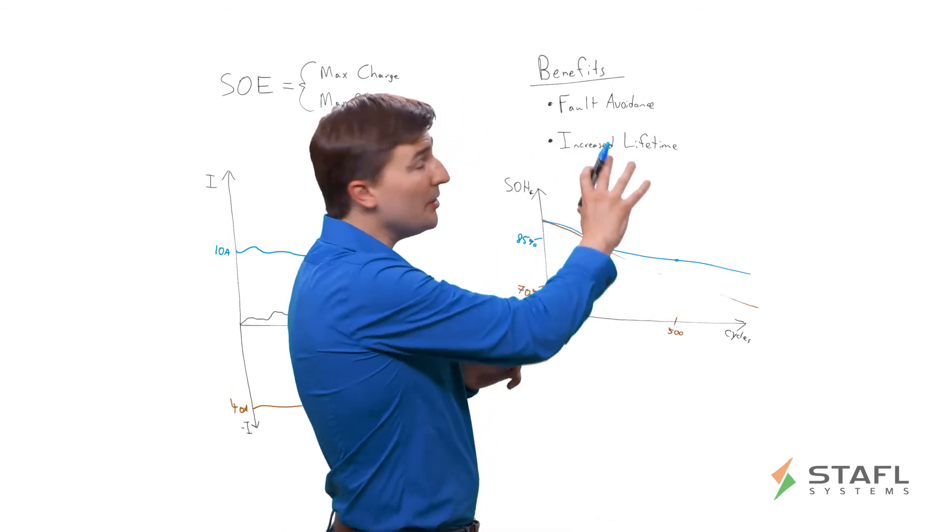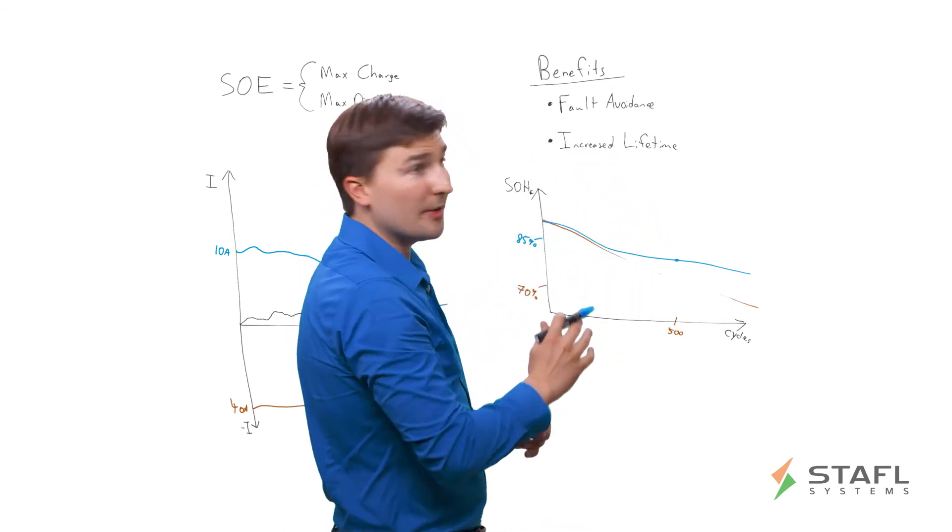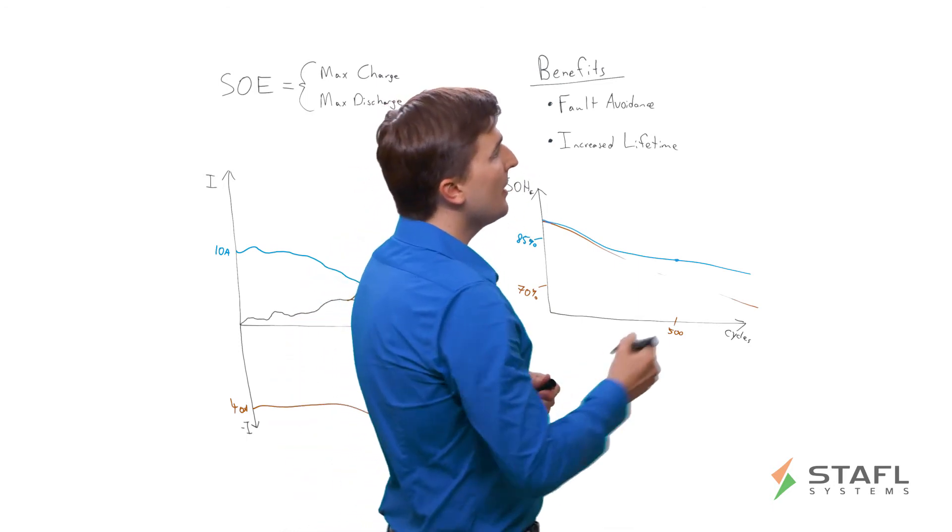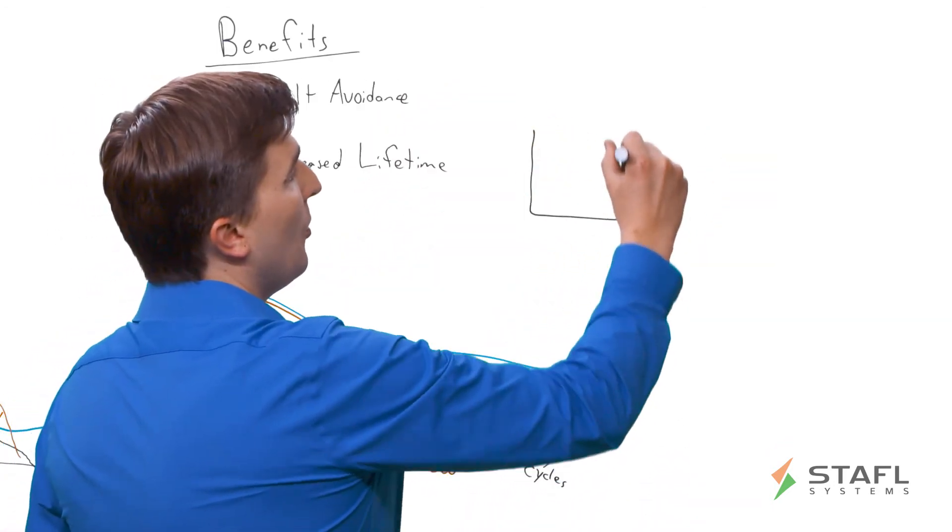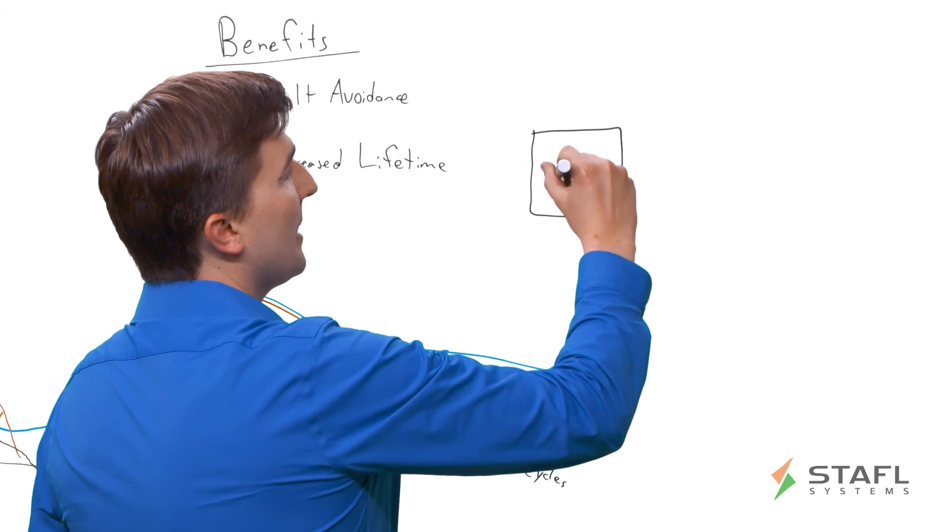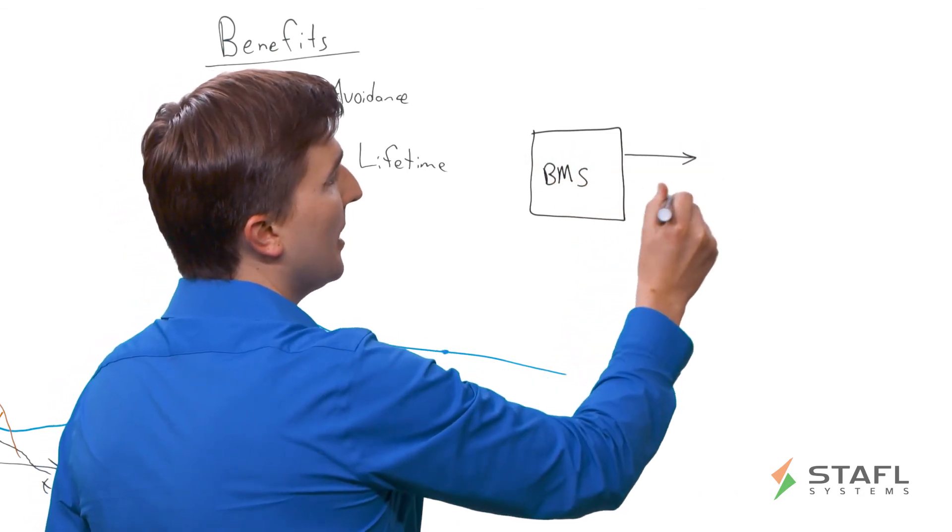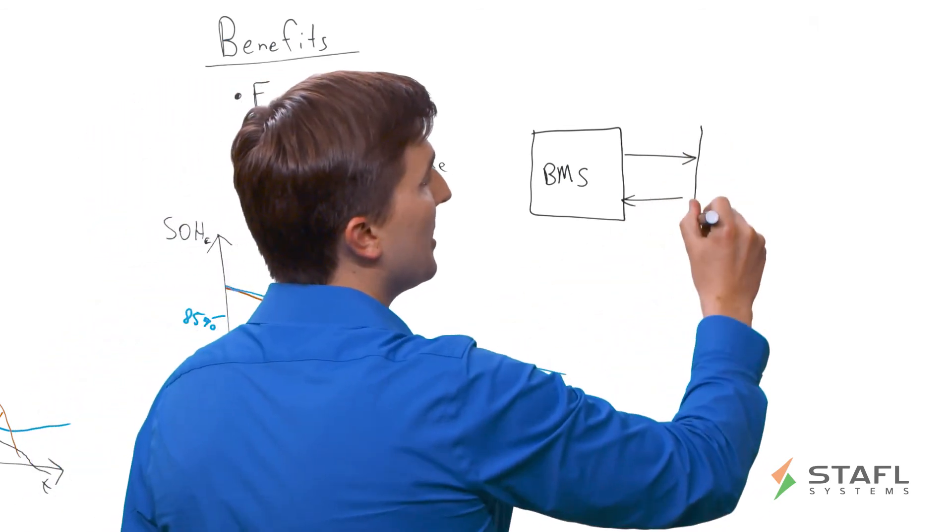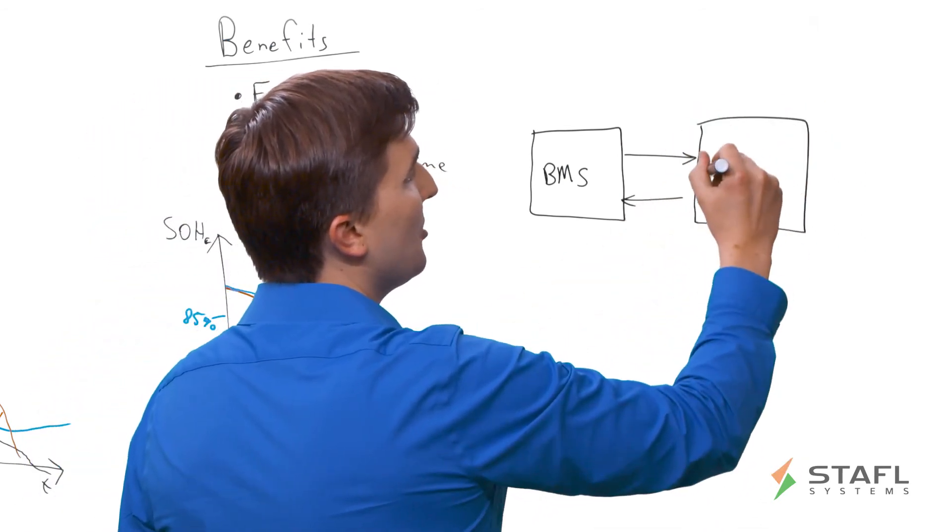So it's a very useful technology to have, and it's very easy to implement. So one final point I would like to make about this is when you have your BMS communicating in a bi-directional way, either CAN bus, RS-485, Ethernet, or some other system to your application controller.